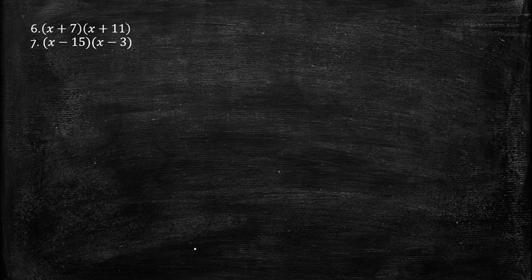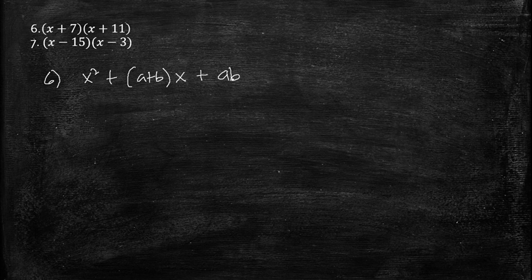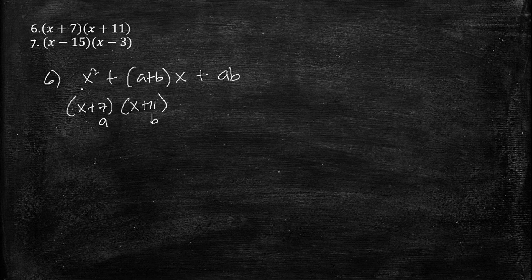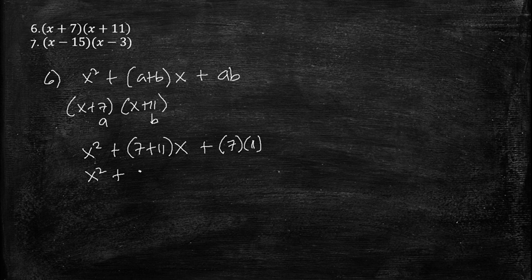Number six: (x + 7)(x + 11). This is in the form (x + a)(x + b) = x² + (a + b)x + ab, where a = 7 and b = 11. So: x² + (7 + 11)x + (7 × 11) = x² + 18x + 77.